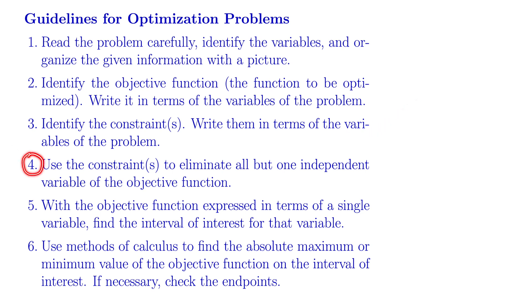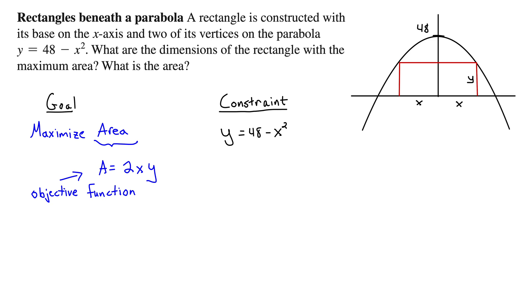Step four, use the constraint to eliminate all but one independent variable of the objective function. Let's solve it out from here. So we want our objective function in terms of only one variable so I'm plugging in this y here.